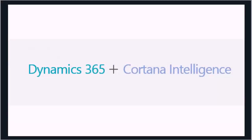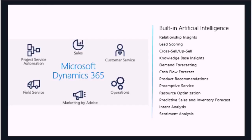Under Cortana Intelligence, the stuff we've got out of the box includes the relationship insights we mentioned around how someone behaves with email and what that means about your relationship with them. We've got things like lead scoring — being able to say how hot is this lead in order to pass the mode to salespeople. We've also got next best product for cross-sell and upsell opportunities.